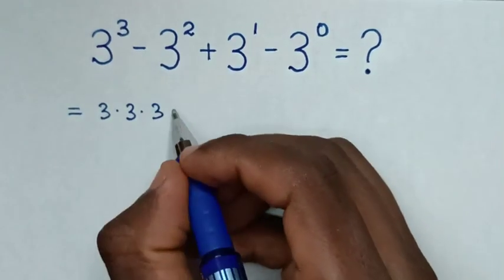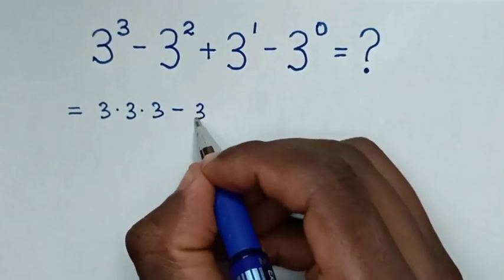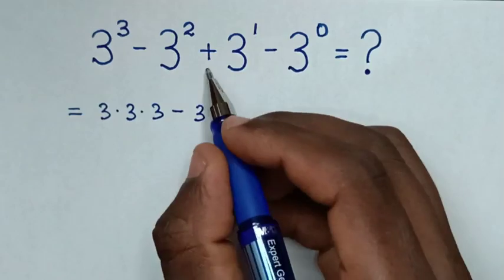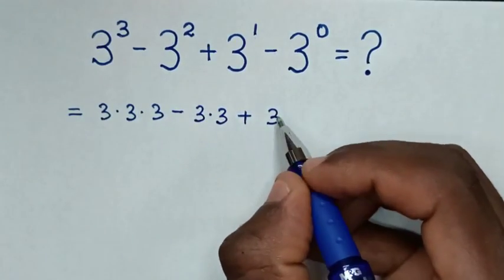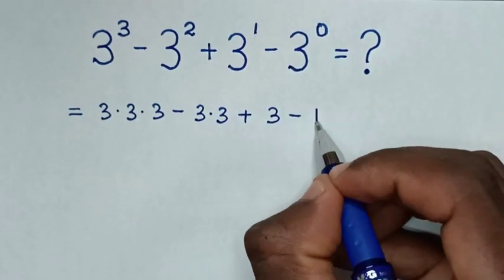Then minus 3², which is the same as 3 × 3. Then plus 3¹, which is 3. Then minus 3⁰, which is 1.